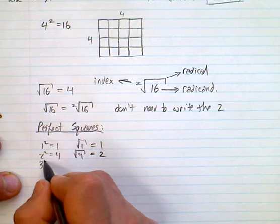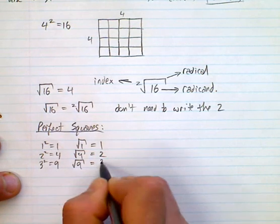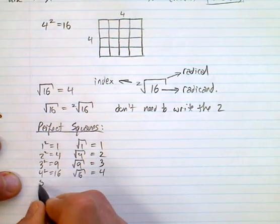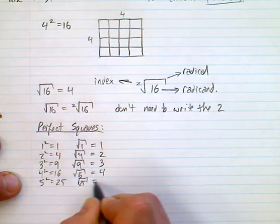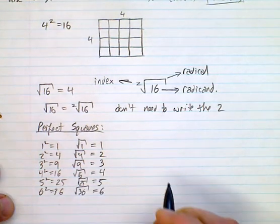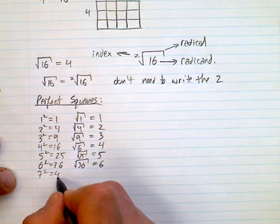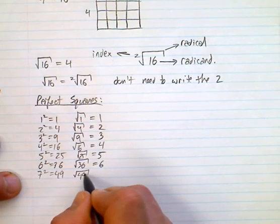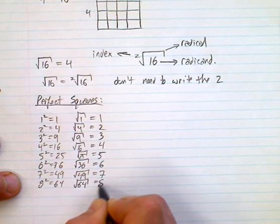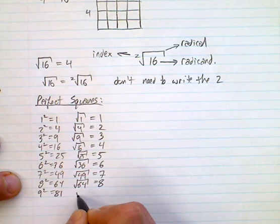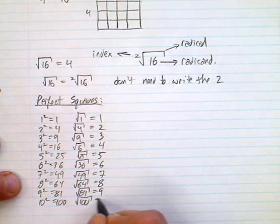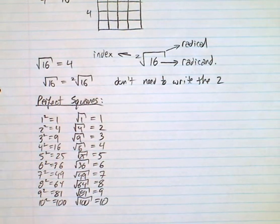3 squared is 9, so the square root of 9 is 3. 4 squared is 16, so the square root of 16 is 4. 5 squared is 25, square root of 25 is 5. 6 squared is 36, square root of 36 is 6. We'll keep going up to 10 — 10 squared is 100, so the square root of 100 is 10. This is your list of perfect squares.